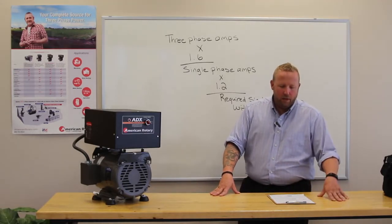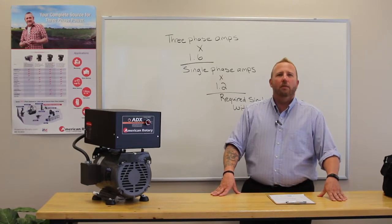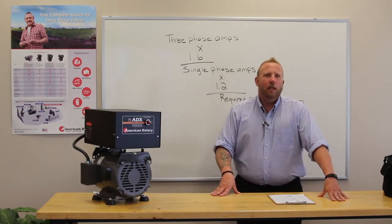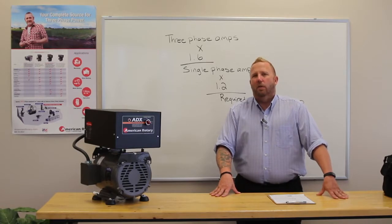Number two, understand your load. You have a light load, medium load or heavy load. To give you a little idea what that looks like, a light load would be a drill press, a table saw. A medium load would be your CNC machines.